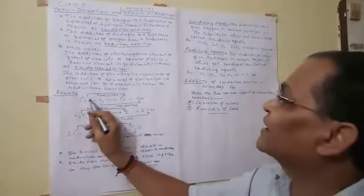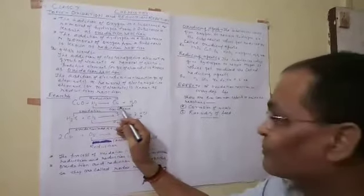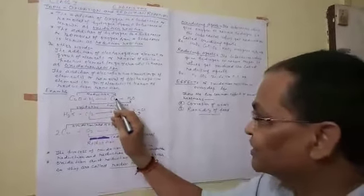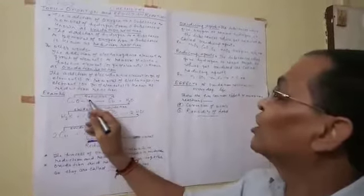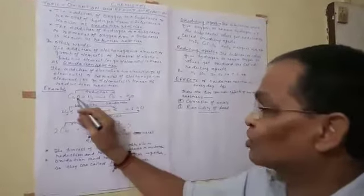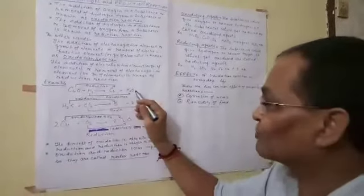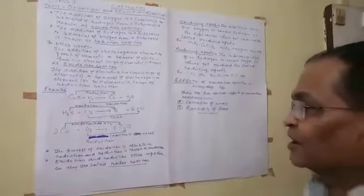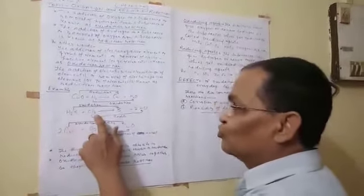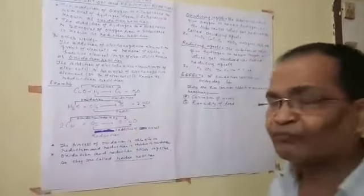In this reaction, copper oxide loses oxygen and is converted into copper metal, so it is reduction because removal of oxygen takes place. Hydrogen gains oxygen — oxygen is added to hydrogen to form water — so it is oxidation.